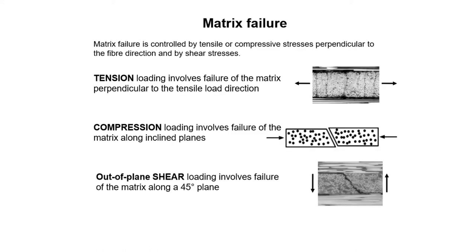Matrix failure is controlled by tensile or compressive stresses perpendicular to the fiber direction and by shear stresses. Tension loading involves failure of the matrix perpendicular to the tensile load direction, and compression loading involves failure of the matrix along inclined planes. Out-of-plane shear loading involves failure of the matrix along a 45-degree plane.